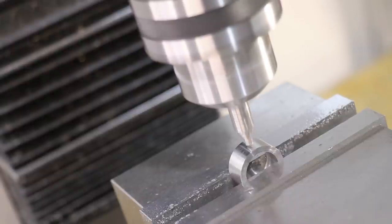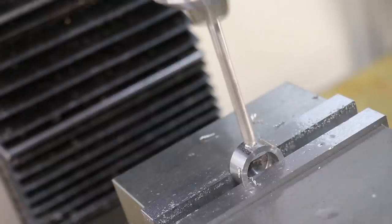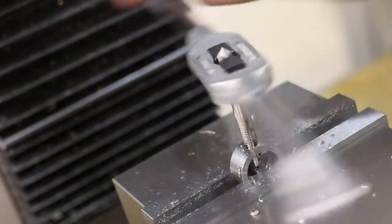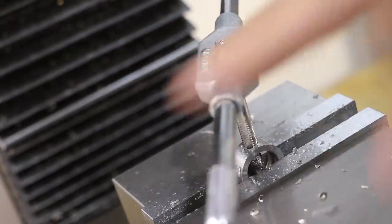Finally, I'll drill and tap an M6 hole for the thumb screw. With that done, we can now assemble it.